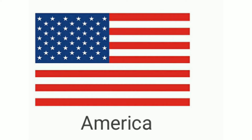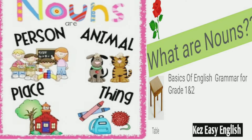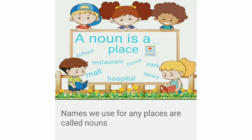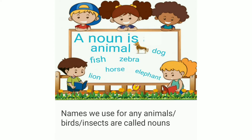America is the name of a place on the map, so that is another name and it's a noun. The names we give to persons and places are nouns. Places like school, restaurant, mall, hospital, house, park, and library are all names we give to certain places and so they are all nouns.